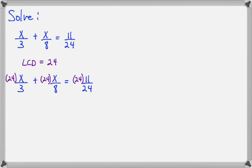Now notice that 24 divided by 3 will simplify to 8. So I have an 8 there and an x still here. On my second term, 24 divided by 8 is 3 and I have an x still here. And on the right side, 24 divided by 24 is 1 and 1 times 11 is 11.